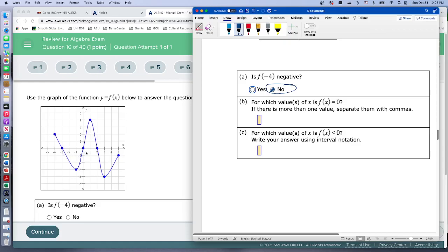Here at negative three, at zero, and at two. So at negative three, these x values, when x is zero y is zero, when x is two y is zero. For which values of x is f of x less than zero?